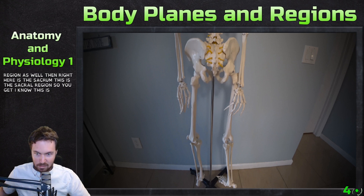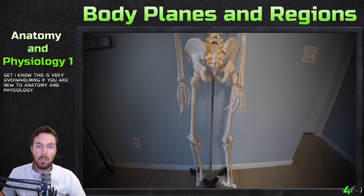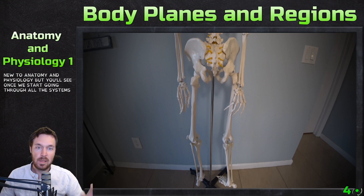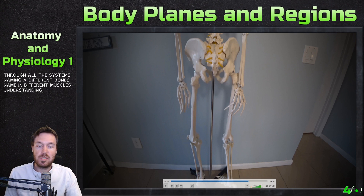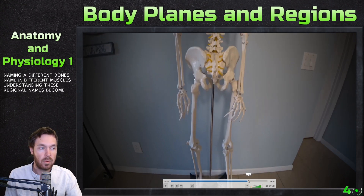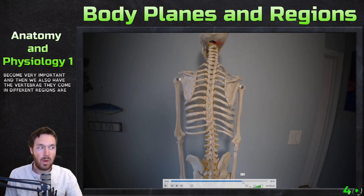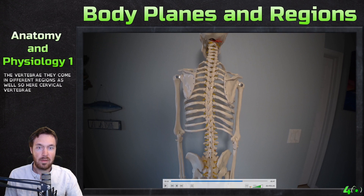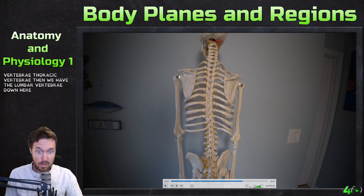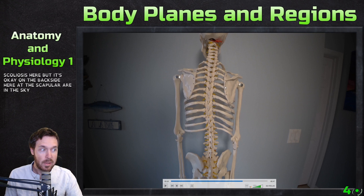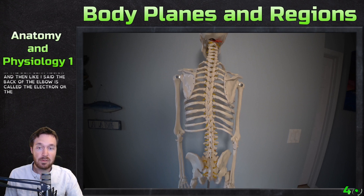I know this is very overwhelming if you are new to anatomy and physiology, but once we start going through all the systems — naming the different bones and muscles — these regional names become very important. We also have the vertebrae, which come in different regions: cervical vertebrae, thoracic vertebrae, lumbar vertebrae at the bottom five, and then the sacral region. My skeleton has a little scoliosis, but on the backside, the scapulae are in the scapular region. The back of the elbow is called the olecranon or the olecranal region.